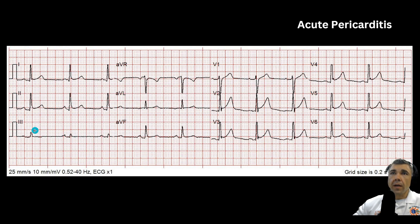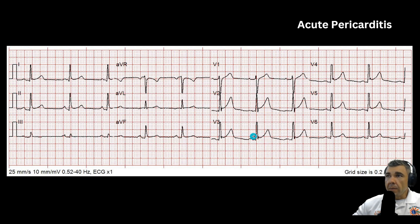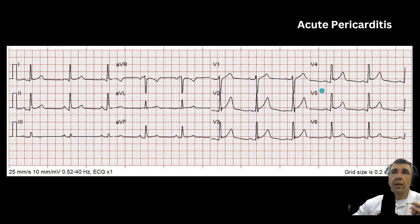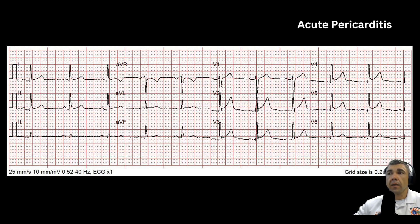Here's another example of acute pericarditis. The other thing is it looks a lot like early repolarization — many of you may have learned about the notched J-point with early repolarization. Acute pericarditis is an early repolarization pattern, and if all you had was the 12-lead, you wouldn't be able to determine whether it's acute pericarditis versus early repolarization. It's the patient presentation that helps you figure out which one is which.